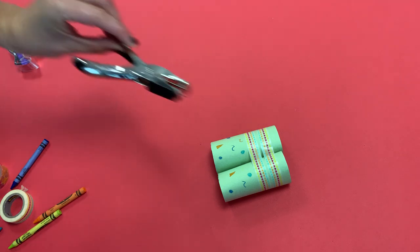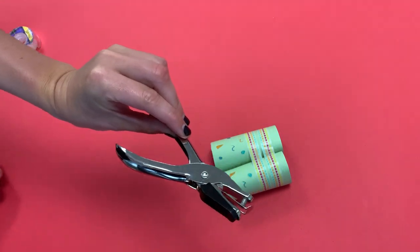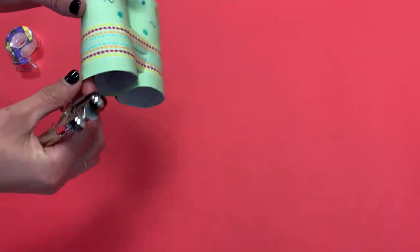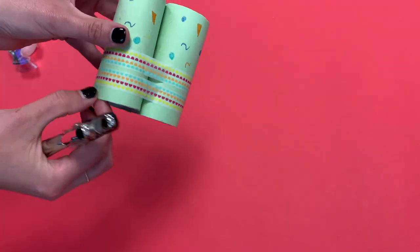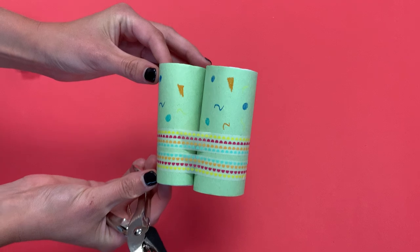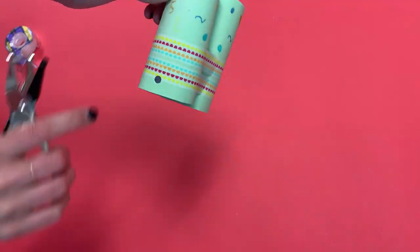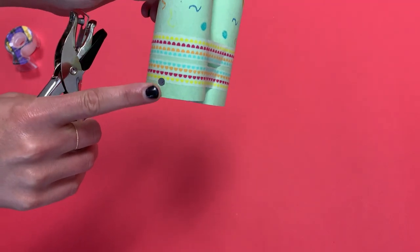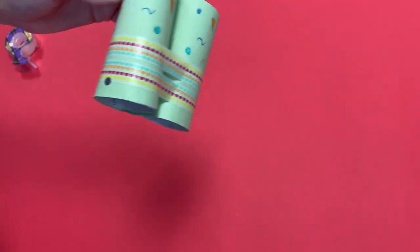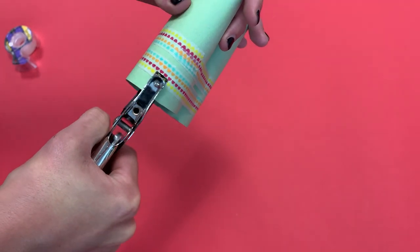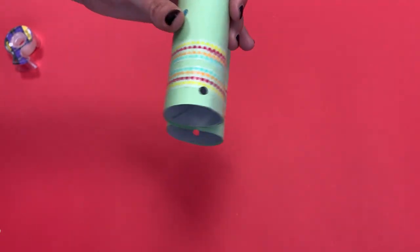The next thing I'm going to do is take my hole punch or you can use scissors. Pointed scissors are really great. Just make sure an adult is using it and we are going to hole punch on the side here. So if this is the top of my binoculars I'm just going to rotate it. Give it a hole punch on the side. Make sure you are a few centimeters away from the edge there just so it doesn't rip. Flip it over do the other side.